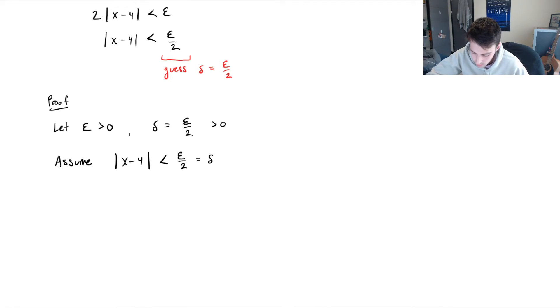So the goal, I'm just going to write it off to the side here, is that we can hopefully get to the point where we can show that that function 2x plus 4 minus what the limit evaluates to is less than epsilon. This is the goal of what we're trying to show.